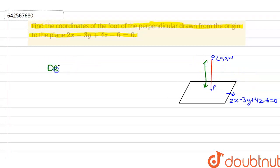Let me write it here. The direction ratios of the OP are proportional to 2, -3, 4.